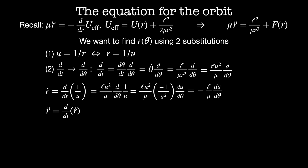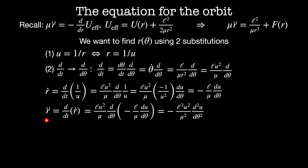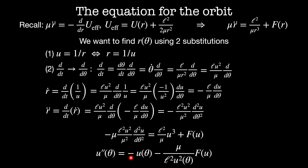To get the acceleration r-double-dot, we take the time derivative of r-dot, giving minus l² u²/mu² times d²u/d-theta². The equation of motion then becomes: l² u²/mu² times d²u/d-theta² equals the centripetal force l²/mu times u³ plus the central force as a function of u. Dividing through, we get u''(theta) = minus u(theta) minus mu/l² times 1/u² times F(u).